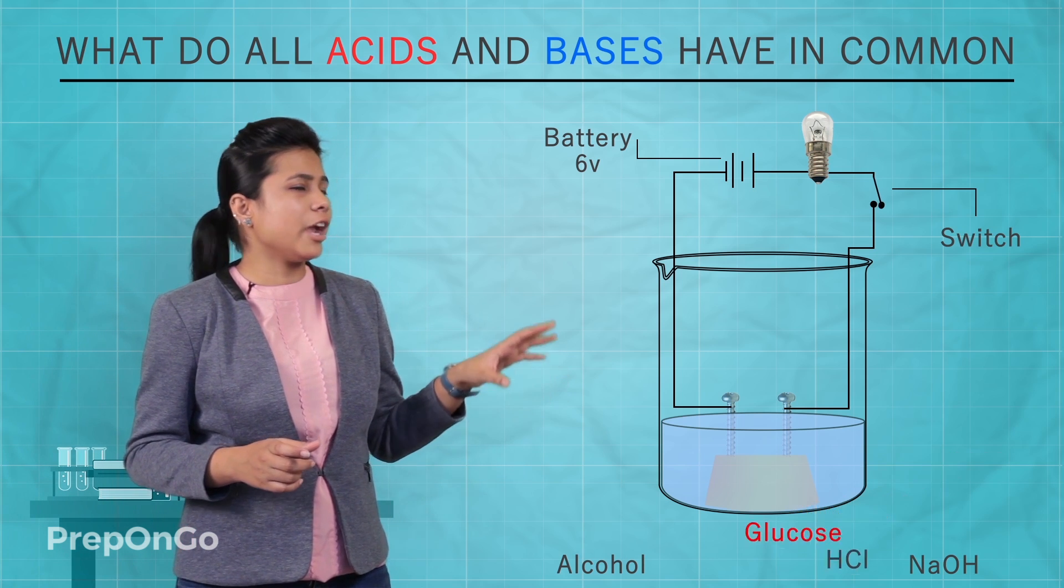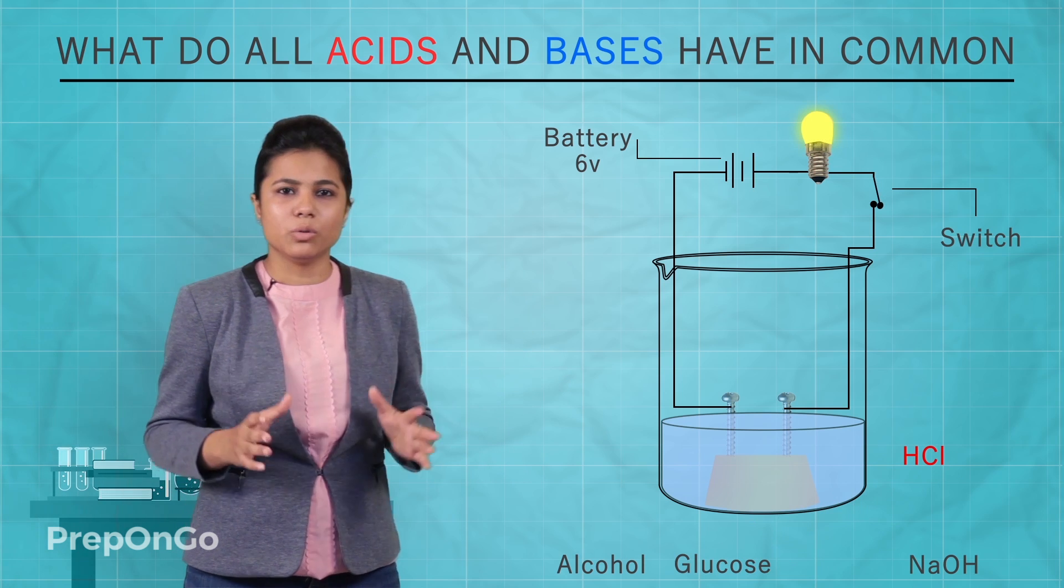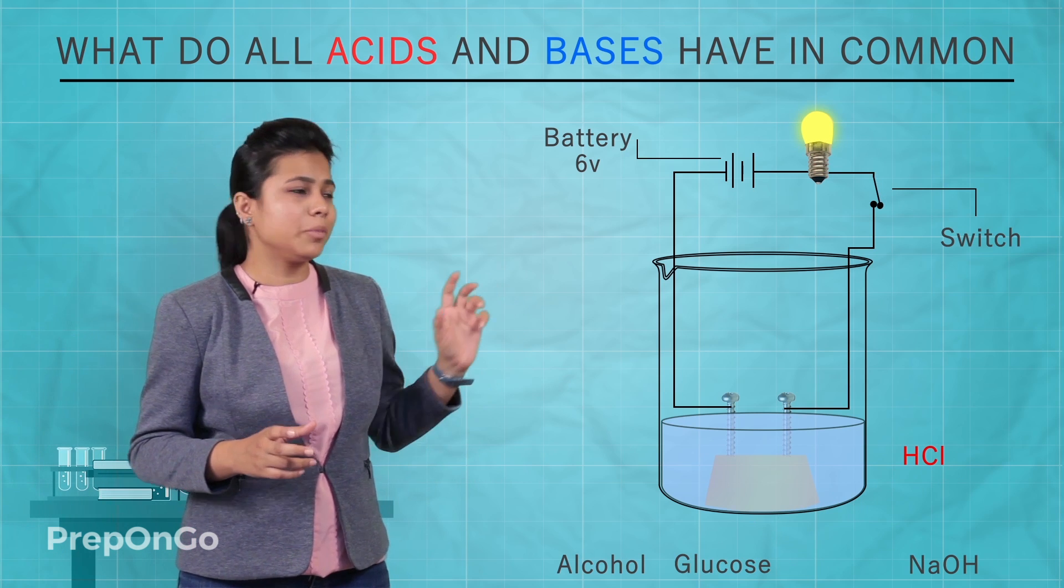Now let's put hydrochloric acid into the beaker. Bingo! It conducted electricity because the bulb is glowing.